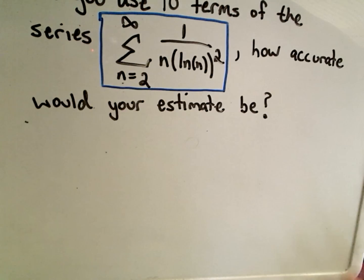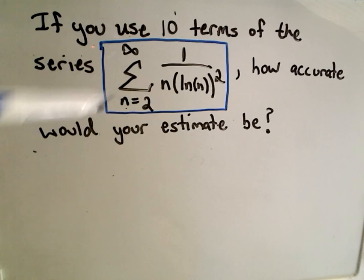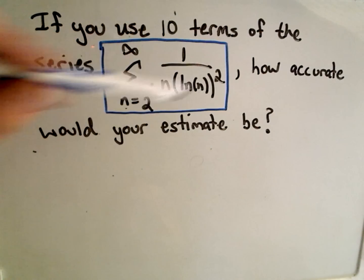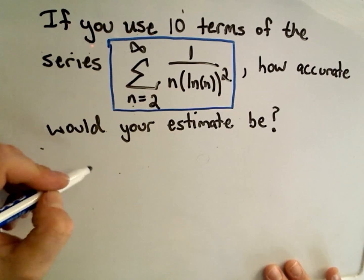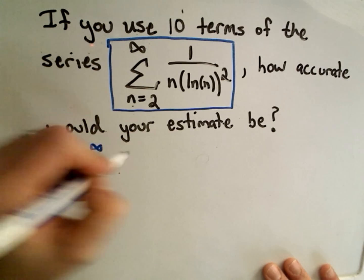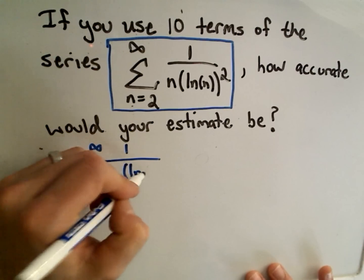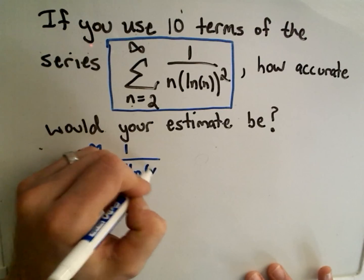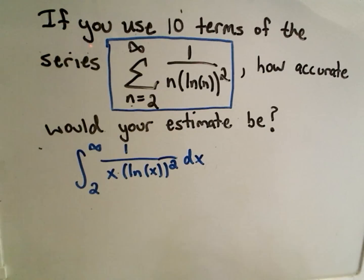In this problem, the question asks: if you use the first ten terms of the series from 2 to infinity of 1 over n times the natural log of n squared, how accurate would your estimate be? So first we should look at the integral from 2 to infinity of 1 over x times the natural log of x squared. I like to use x's to keep the natural logarithms cleaner.